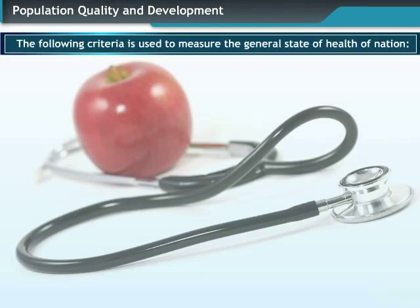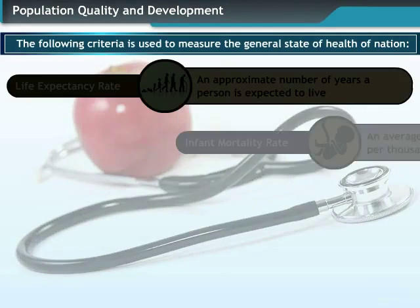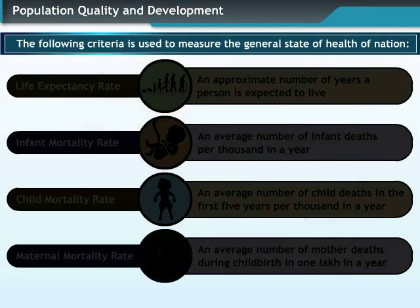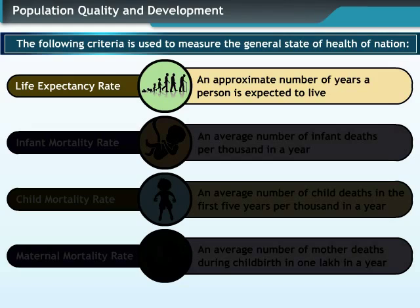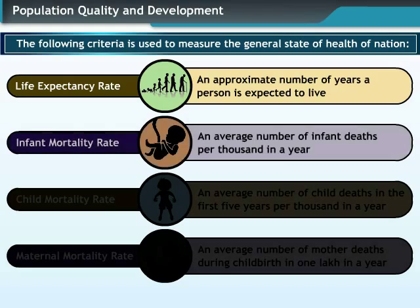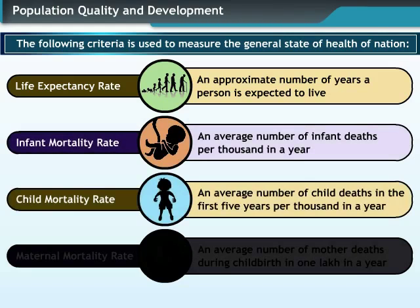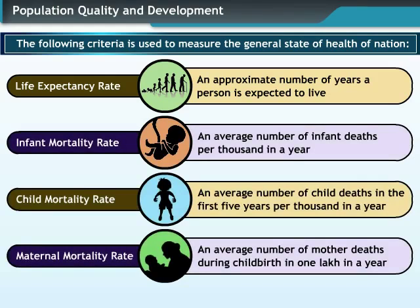In order to understand the overall state of health of the people of a country, certain criteria are used. These include the life expectancy rate, infant mortality rate, child mortality rate, and maternal mortality rate.